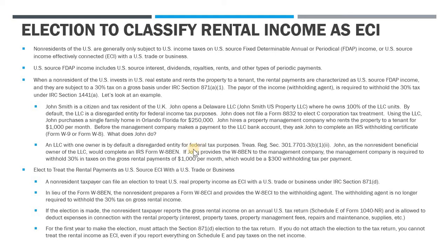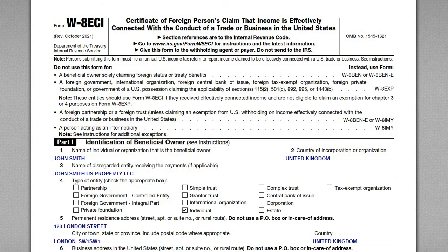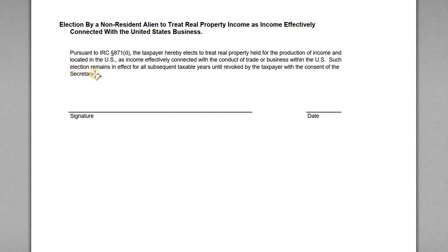For this video I wanted to focus on when non-residents of the U.S. invest in U.S. real estate and earn rental income. There is a particular election that a lot of non-residents should be making — an election to classify U.S. source rental income as effectively connected income. I've got one slide with the rules and a fact pattern, a W-8 ECI that we'll need to go through, and a sample Section 871D election.